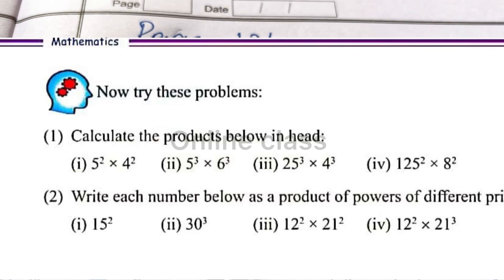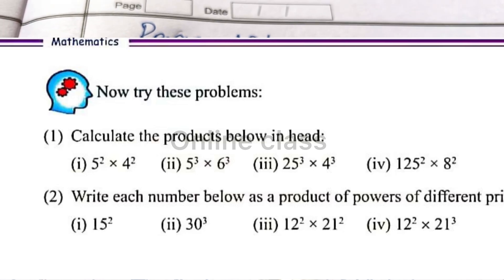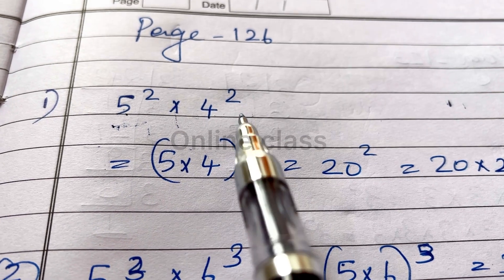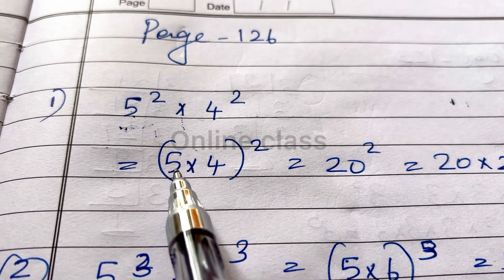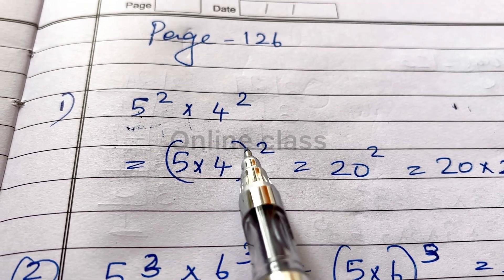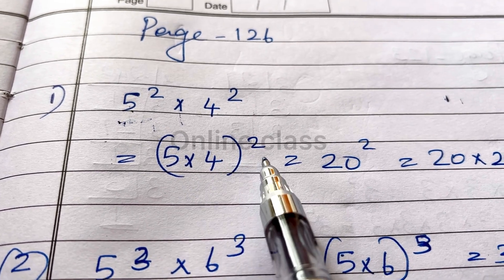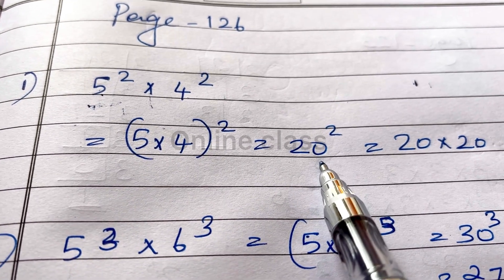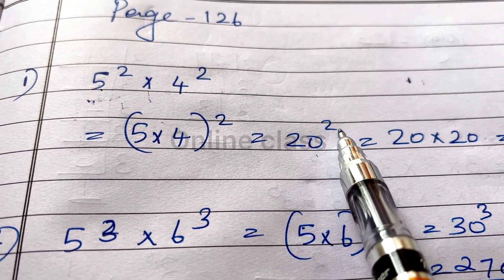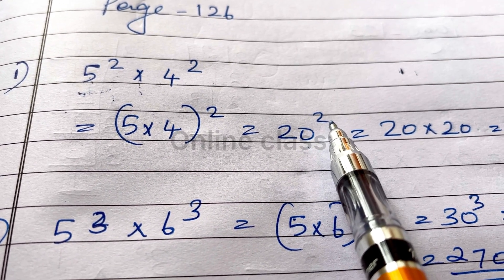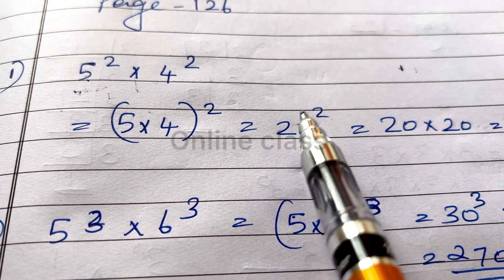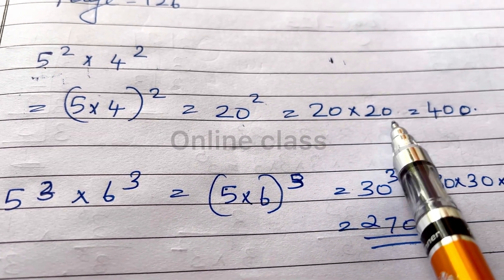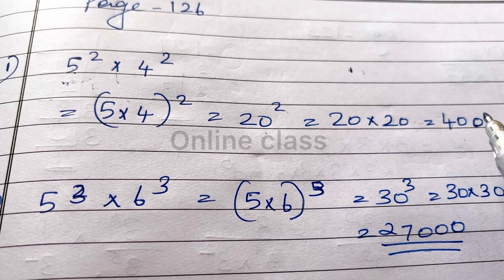Let's say 5 square into 4 square. We are going to draw the square and put 5 into 4, all square. 5 into 4 is 20, and 20 square is what we call the square.